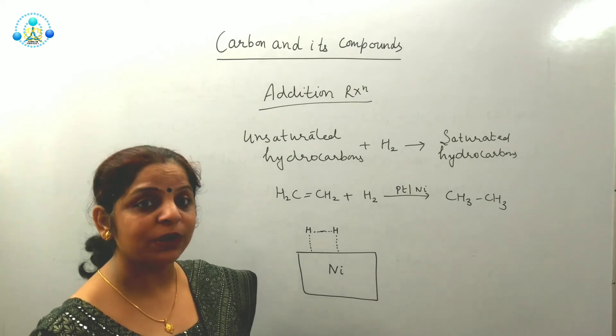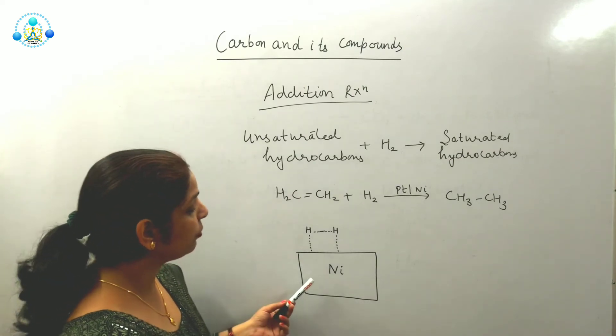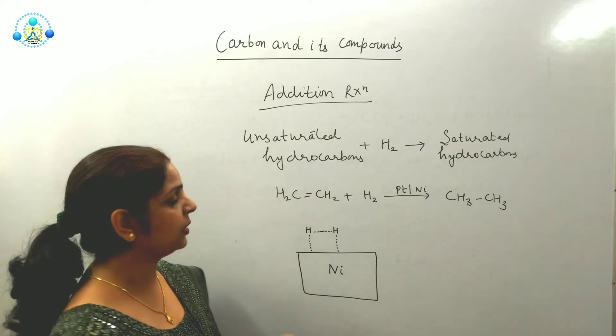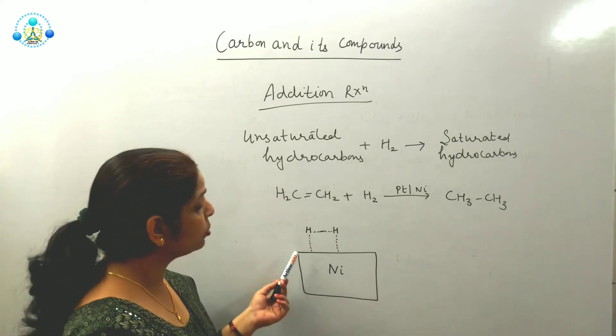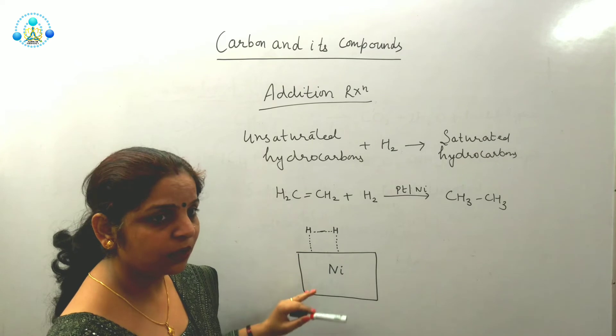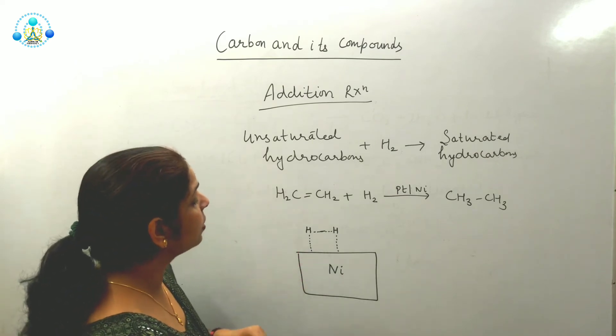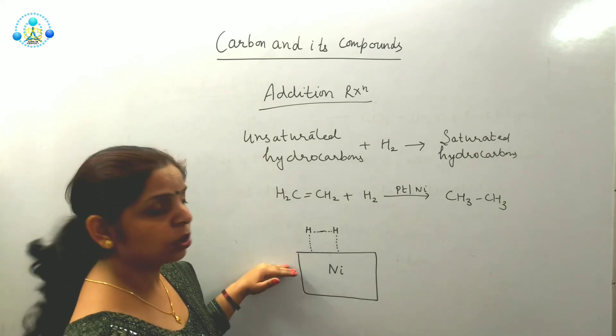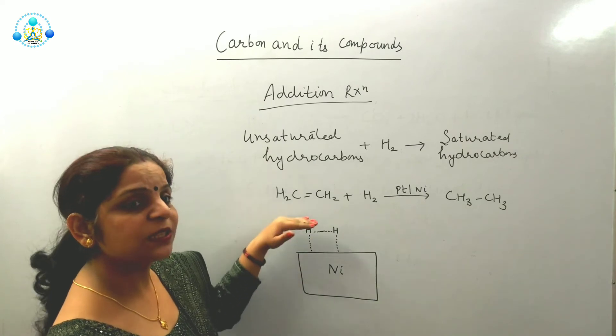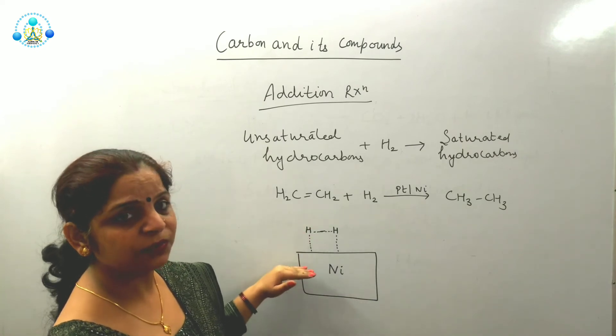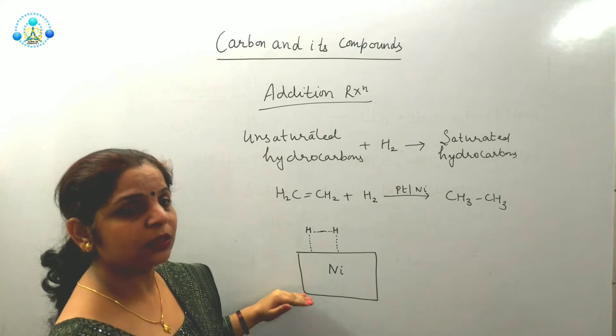Similarly, here if you are using surface of nickel metal as catalyst, hydrogen molecules will start coming here. And they will start absorbing on the surface of nickel. Absorption means when something is sticking on the surface only. It is not going in the bulk.